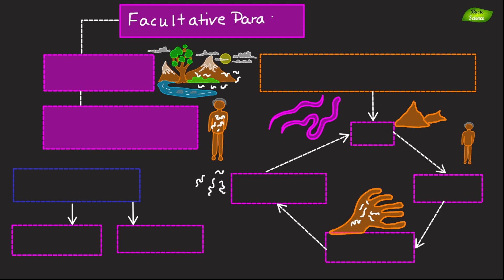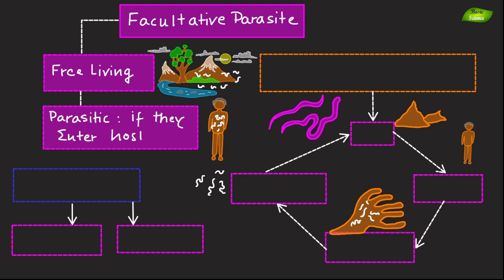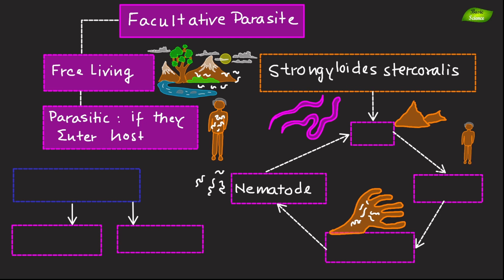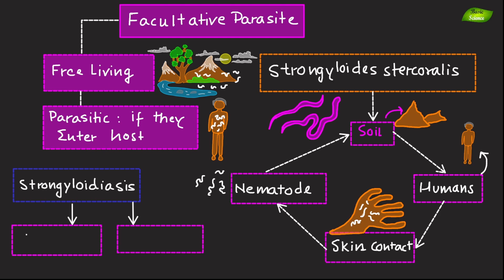Facultative parasites are usually free-living but can become parasitic if they enter a host. An example is Strongyloides stercoralis, a nematode that can live freely in soil but can infect humans through skin contact with contaminated soil, causing strongyloidiasis, which can be severe and chronic.